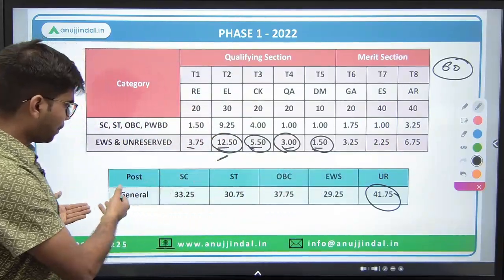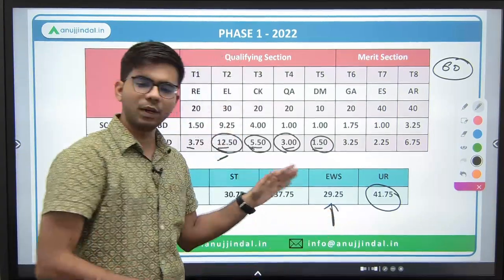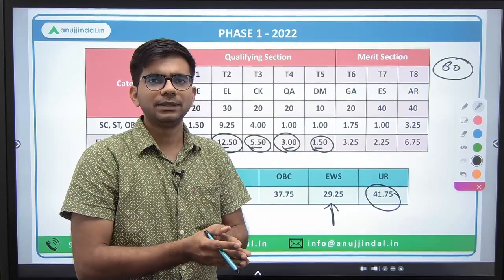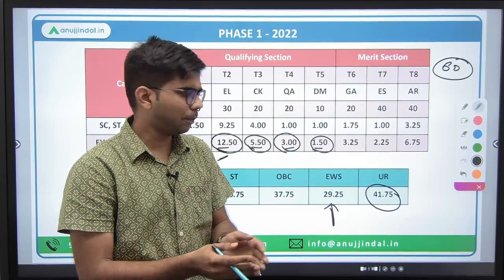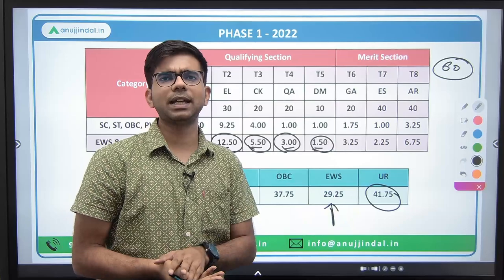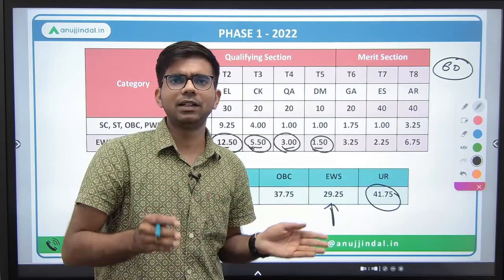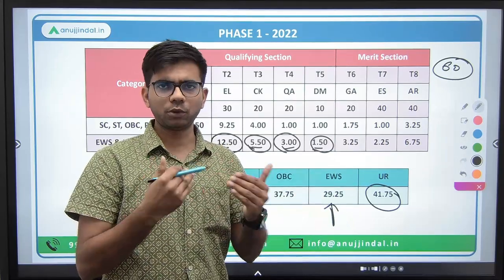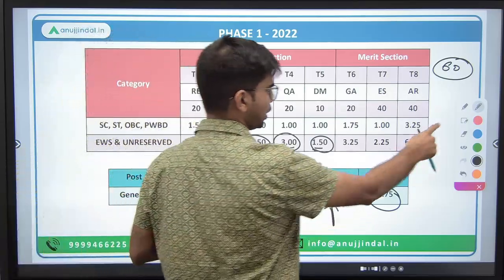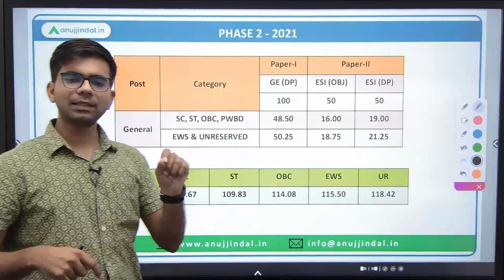You can also check the category-wise breakdown. The EWS cutoff is a bit lower. The probable reason is that the government is trying to promote people belonging to this category, or the number of applications might be less, so seats need to be filled. This was regarding Phase 1.